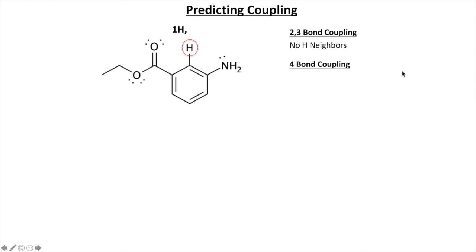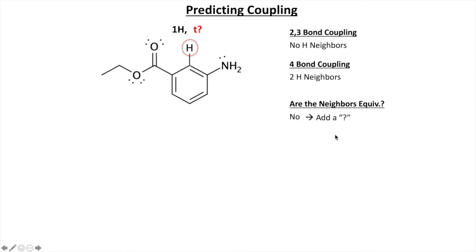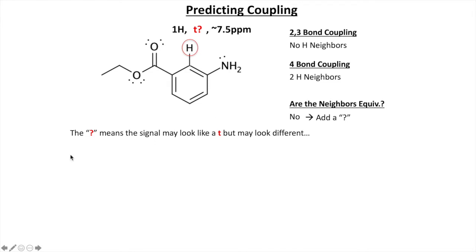So it has these two four-bond neighbors that it will couple with. Are those two neighbors equivalent? This hydrogen is on the side of the nitrogen, that one's on the side of the ester - so no, they're not equivalent. I add a question mark to my prediction: this is a two-hydrogen triplet-question-mark, meaning I'm not sure it'll look like a nice clean triplet. I expect it to show about 7.5 parts per million because it's on the aromatic ring.